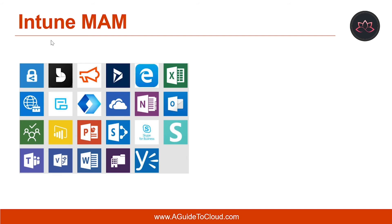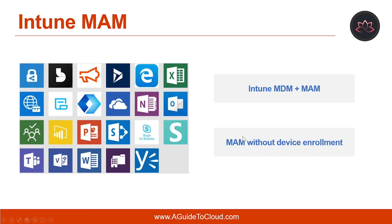Intune MAM supports two configurations. The first is Intune MDM plus MAM, where you can manage apps using MAM and App Protection Policies only on devices enrolled with Intune MDM. The second configuration is MAM without device enrollment, which allows you to manage apps using MAM and App Protection Policies on devices not enrolled with Intune MDM. With MAM without device enrollment, a work or school-related app containing sensitive data can be managed on almost any device, including personal devices in bring-your-own-device scenarios.